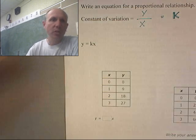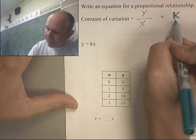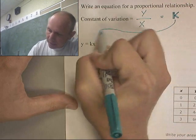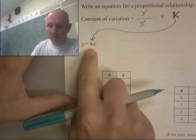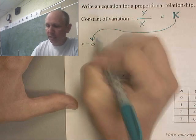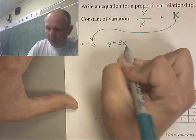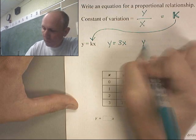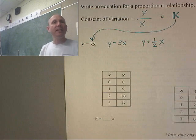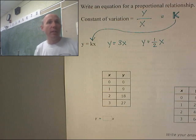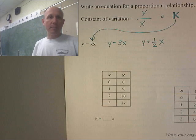Here we go. So I'm going to be looking for this k value. Once I have that k value, I take it, and I put it right here into this little equation. It's not going to be y equals kx. It's going to be something like y equals 3x or y equals 1 half x, depending on the k value, the constant of variation that I'm going to find.